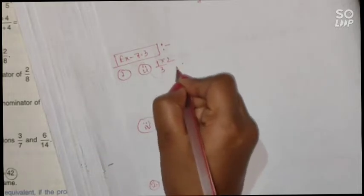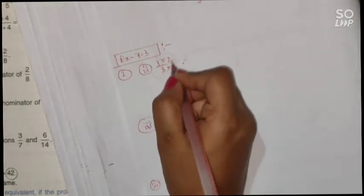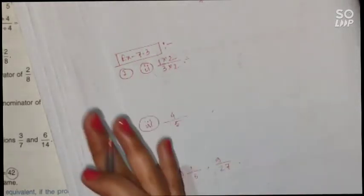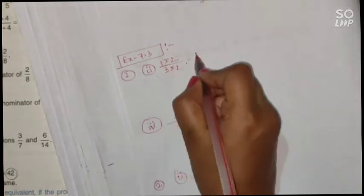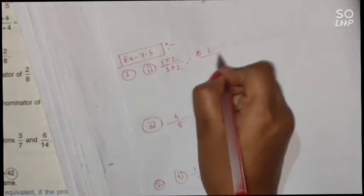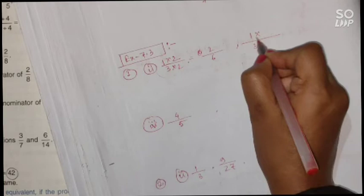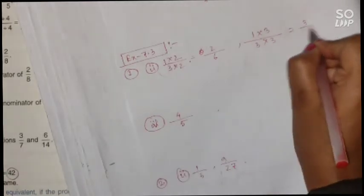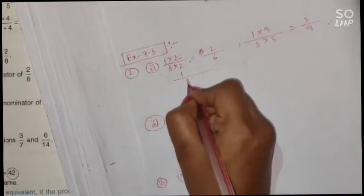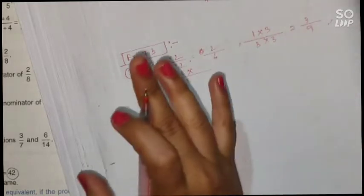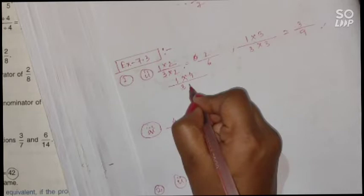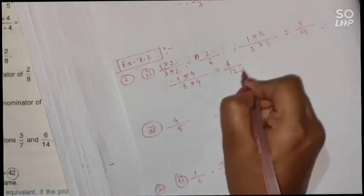For 1 by 3, we will multiply the numerator and denominator both by a non-zero number. Multiply both by 2: 2 times 1 is 2, 2 times 3 is 6 — giving 2 by 6. Then multiply by 3: 3 times 1 is 3, 3 times 3 is 9 — giving 3 by 9. That completes two equivalent fractions, but you have to find four.